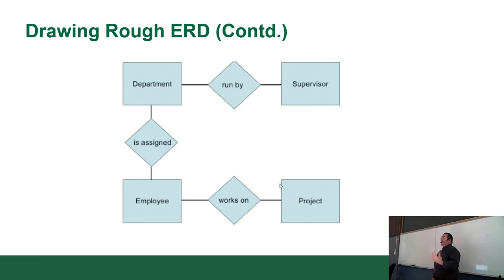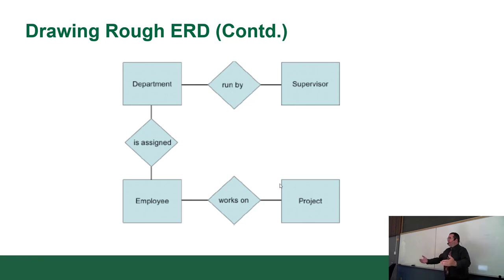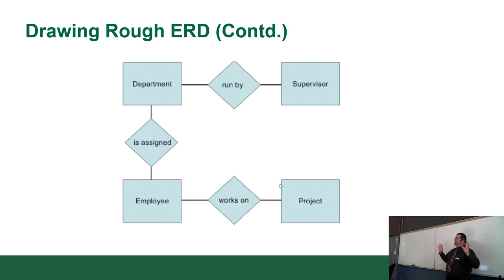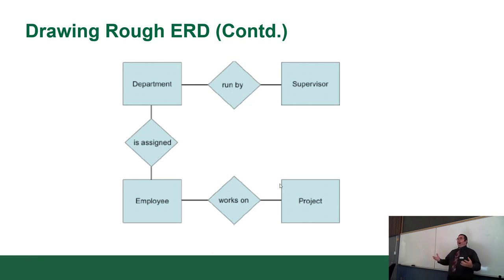The initial diagram can be shown to a client: does this make sense to you? At this point you have no extra symbols — just basic concepts that the client should be able to understand. Sit down with them and make sure you understand the ground rules properly right off the bat.